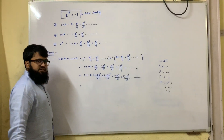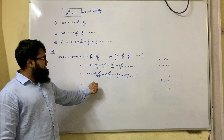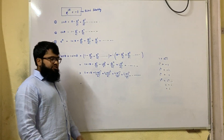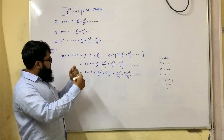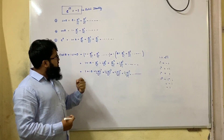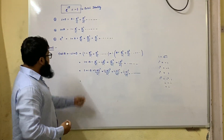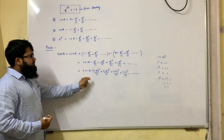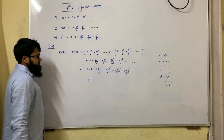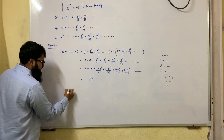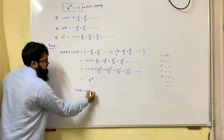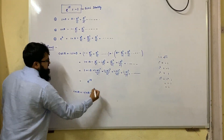Now you can see that this is the formula of e to the power i theta. e to the power theta is 1 plus theta plus theta square by 2 factorial plus theta cube by 3 factorial plus theta raise to 4 by 4 factorial, and so on. So e to the power i theta — I have proven therefore that cos theta plus i sine theta is equal to e to the power i theta.